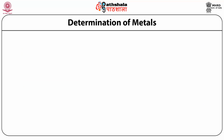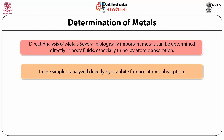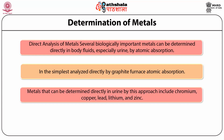In the direct analysis of metals, several biologically important metals can be determined directly in body fluids, especially urine, by atomic absorption spectroscopic methods. In the simplest cases, the urine is diluted with water or acid and a portion analyzed directly by graphite furnace atomic absorption, taking advantage of the very high sensitivity of that technique. Metals that can be determined directly in urine by this approach include chromium, copper, lead, lithium and zinc.